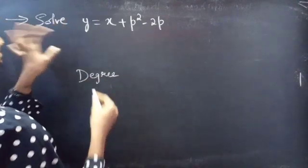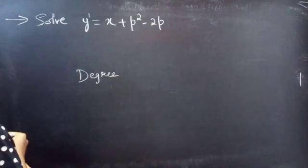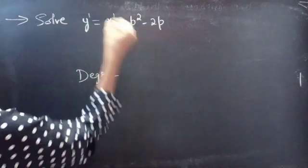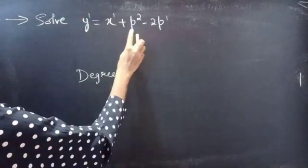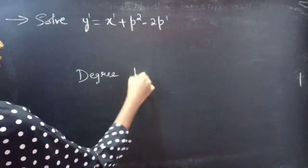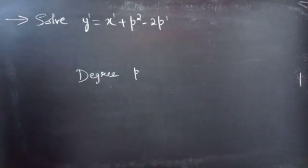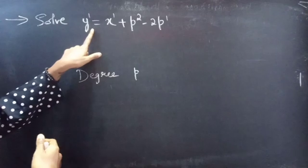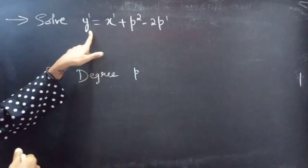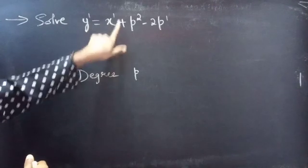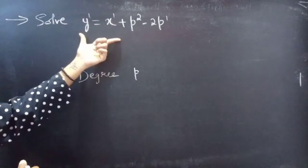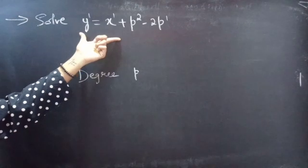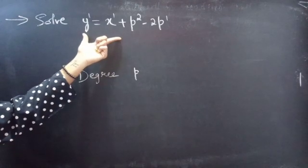Let's see the power of y. We have power of y as 1, power of x as 1, and power of p as 1 and 2. So the degree of p — the equation is first degree in y and first degree in x, since the power of x is 1 and power of y is 1. So we can solve this equation using solvable for y and also solvable for x as well.